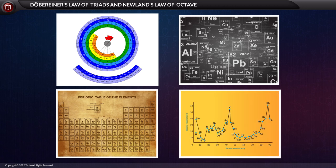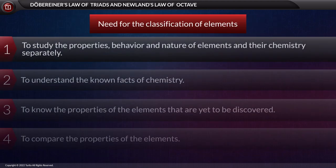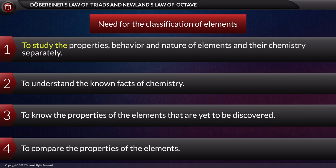Let us list down possible reasons for which we should classify the elements: one, to study the properties, behavior, and nature of elements and their chemistry separately; two, to understand the known facts of chemistry; three, to know the properties of elements that are yet to be discovered; and four, to compare the properties of the elements.